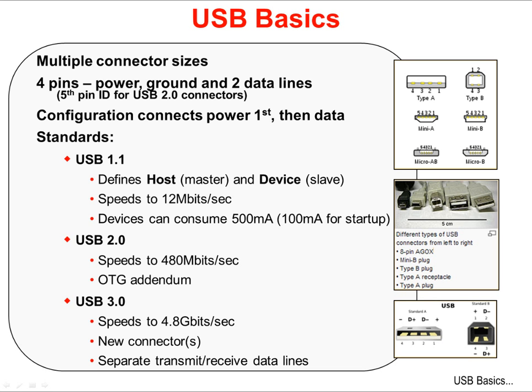Power will be connected before the data is. The USB 1.1 standard defines the host as the master and the device as the slave, with speeds up to 12Mbps. Devices can consume 500mA once they are enumerated, but only 100mA at startup. USB 2.0 supports speeds as high as 480Mbps, but a full speed 12Mbps port, like the one on the Tiva C-series device, is still compliant.